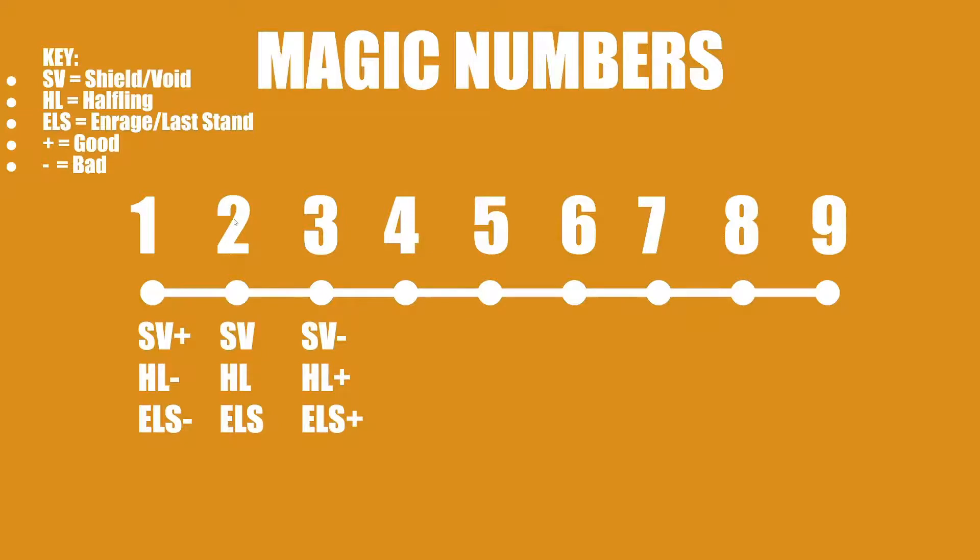Four is an even number, so everything's normal. Five is bad for Shield and Void - Shield/Void doesn't get full effectiveness. This isn't too bad for Shield and Void because it's still reducing two damage, but three damage is still quite a lot. Halfling is good because it reduces it all the way down to two, I believe. I haven't double-checked this, but I think that's how it works.